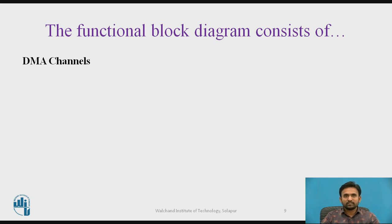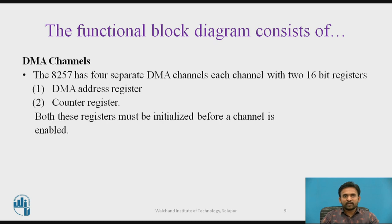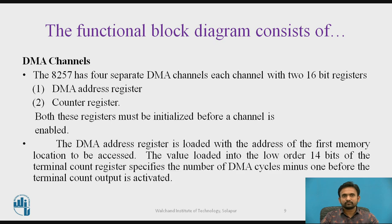The next functional block consists of DMA channels. The 8257 has four separate DMA channels, each channel with two 16-bit registers: a DMA address register and a terminal count register. Both these registers must be initialized before a channel is enabled. The DMA address register is loaded with the address of the first memory location to be accessed, and the value loaded into the low-order 14 bits of the terminal count register specifies the number of DMA cycles minus 1 before the terminal count output is activated.